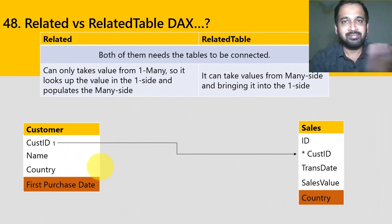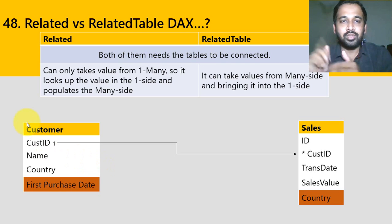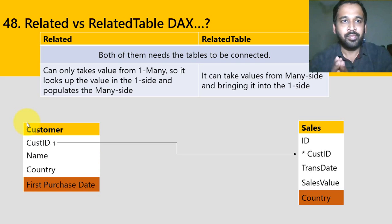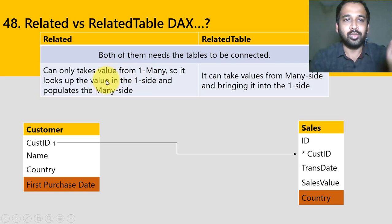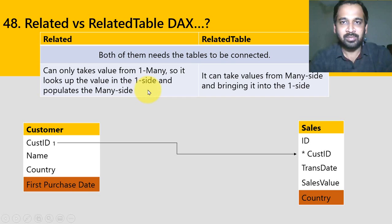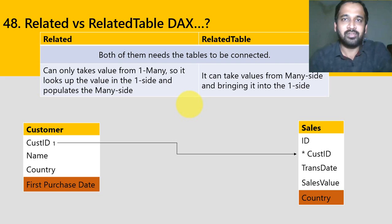The next question is: what is the difference between RELATED and RELATEDTABLE DAX functions? First of all, both require the tables to be connected to each other with a relationship. RELATED can only retrieve a value from the 'one' side and populate the 'many' side, whereas RELATEDTABLE can take values from the 'many' side and bring them into the 'one' side. If this is not clear, let's understand it with a scenario.